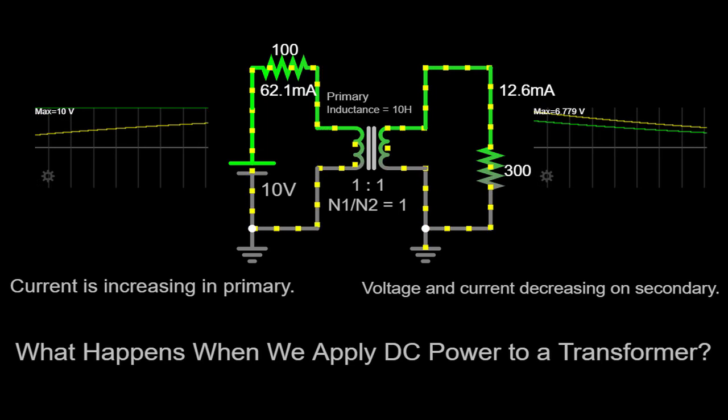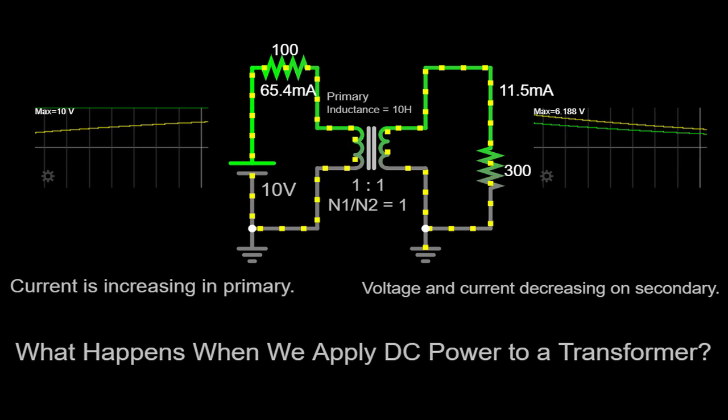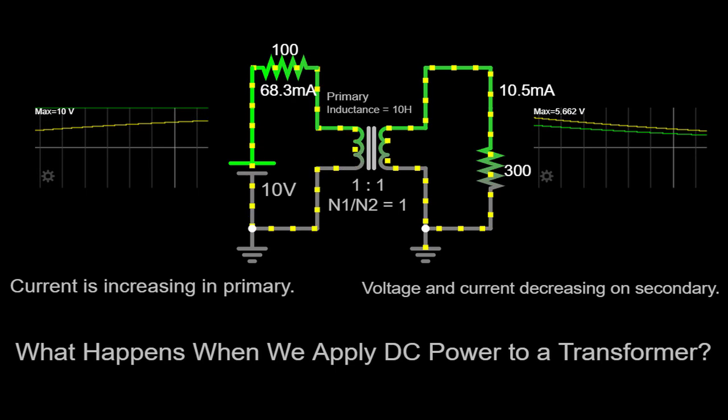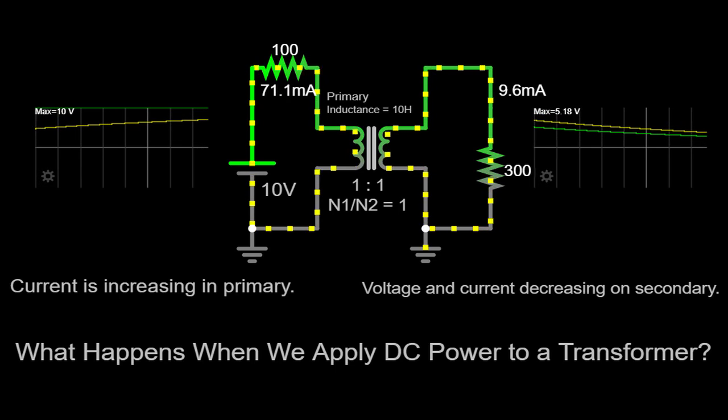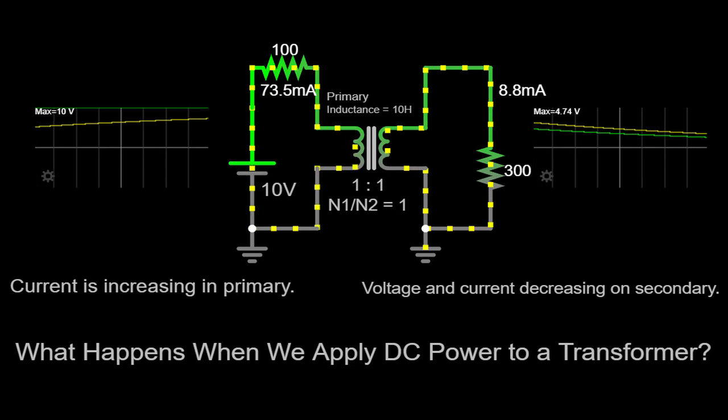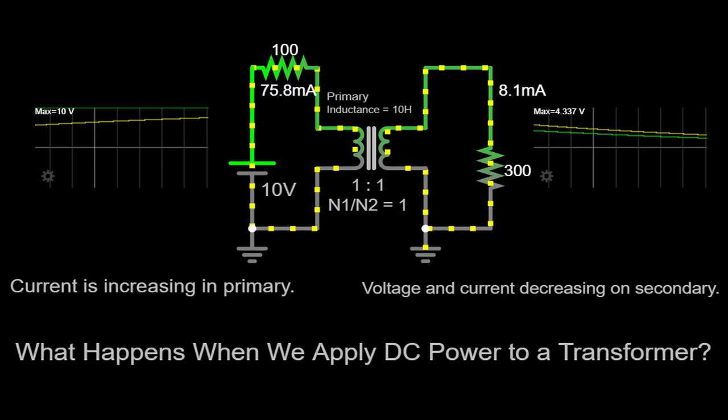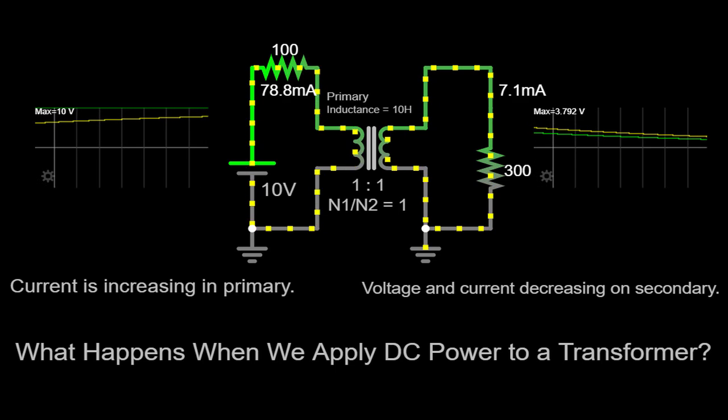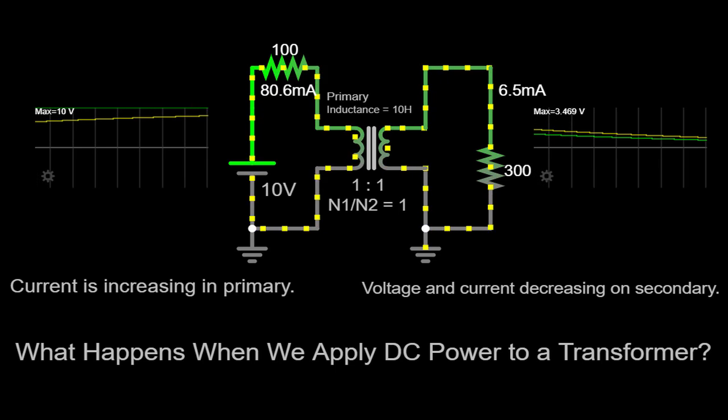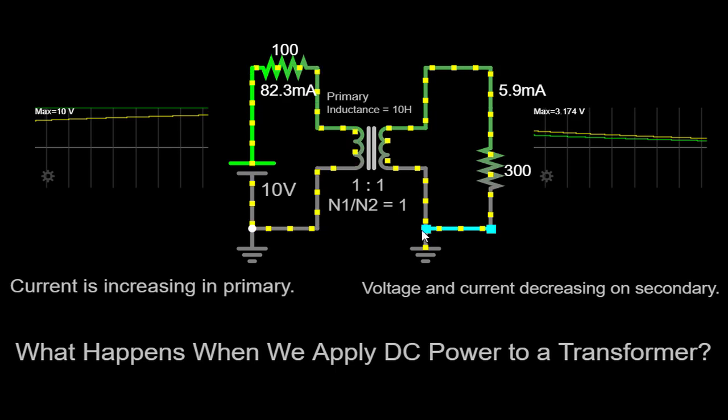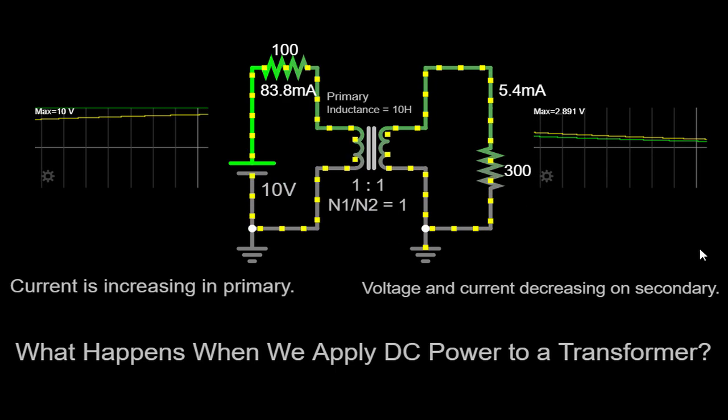When a transformer is supplied with DC power, a significant difference arises. Since DC power does not have the alternating magnetic field associated with AC, there is no voltage induction in the secondary winding. This means that the transformer fails to transfer power from the primary to the secondary circuit, resulting in no usable output.